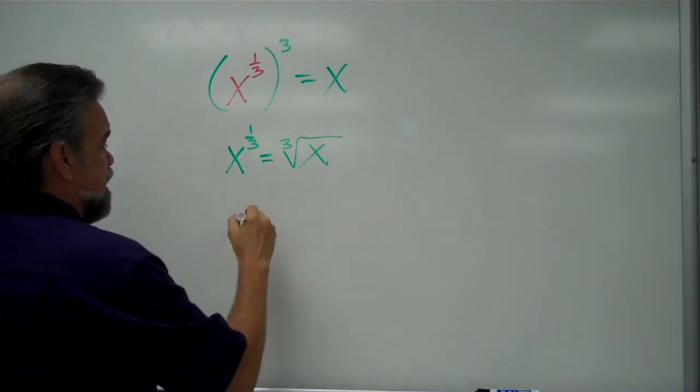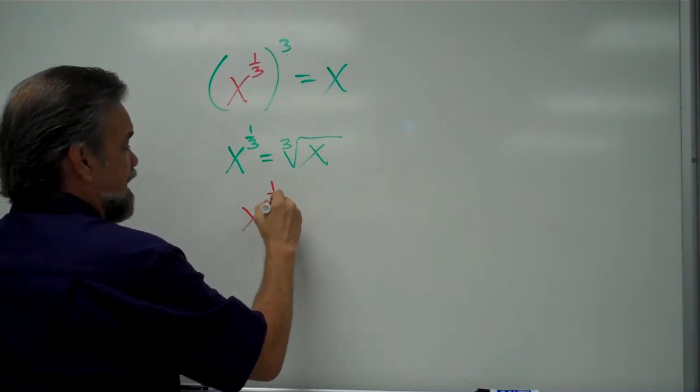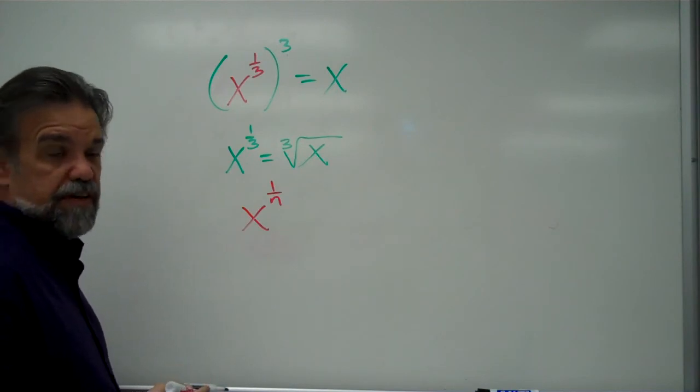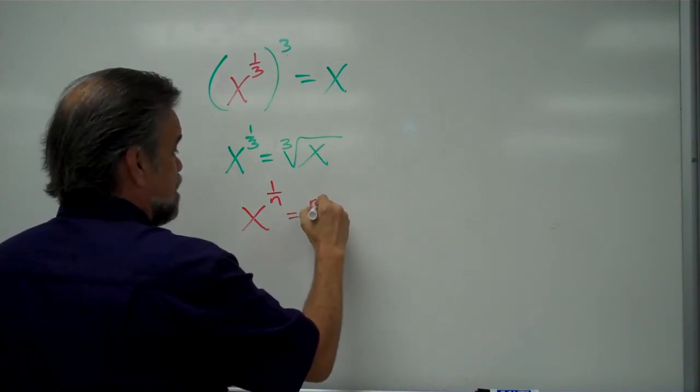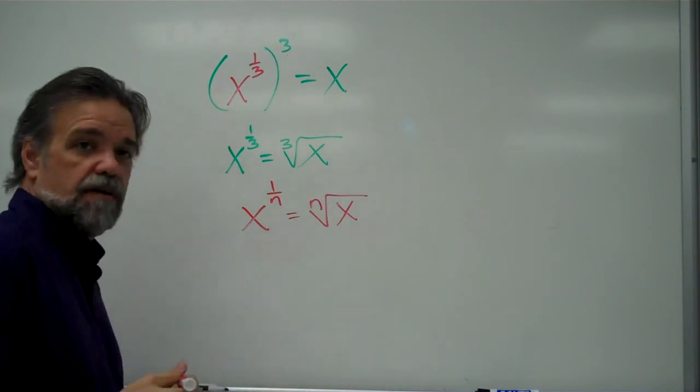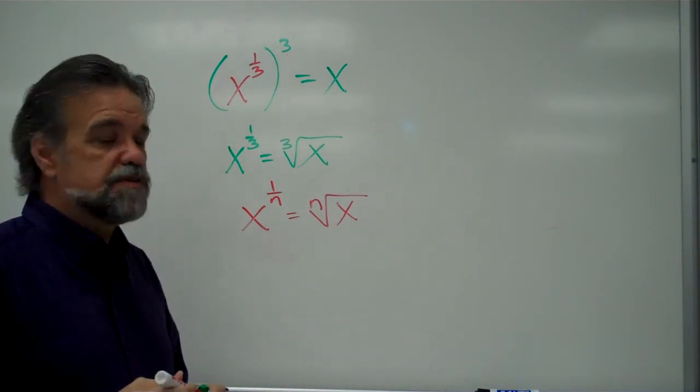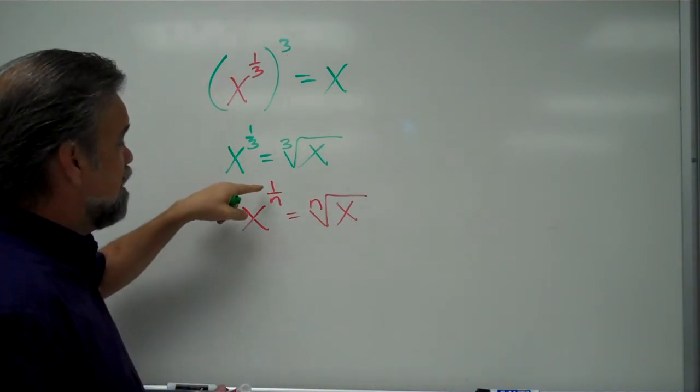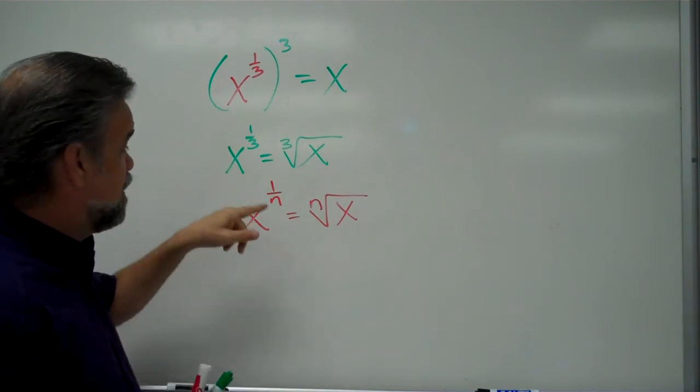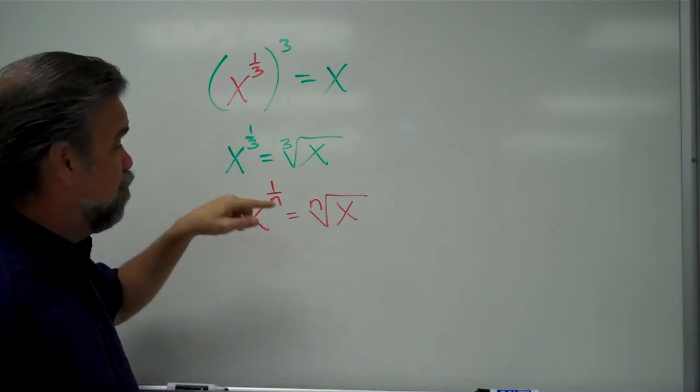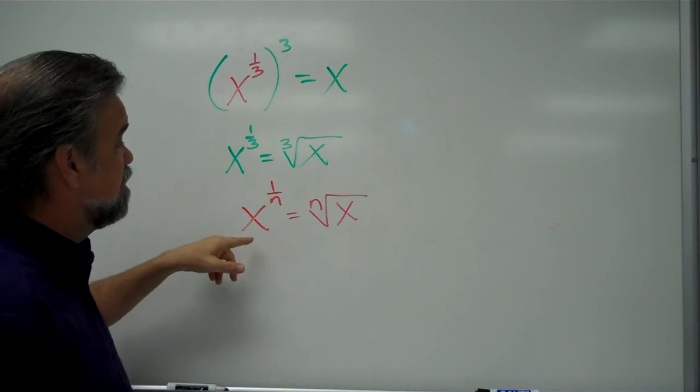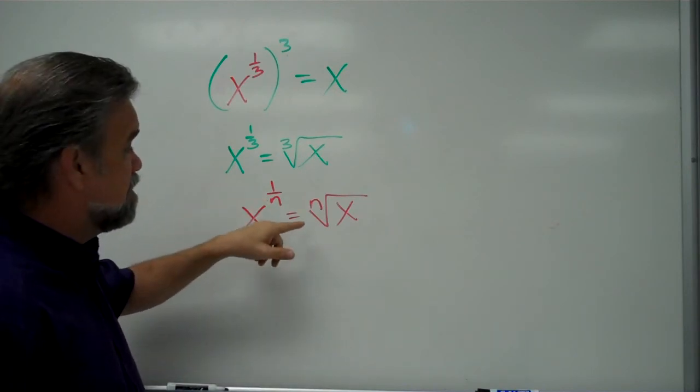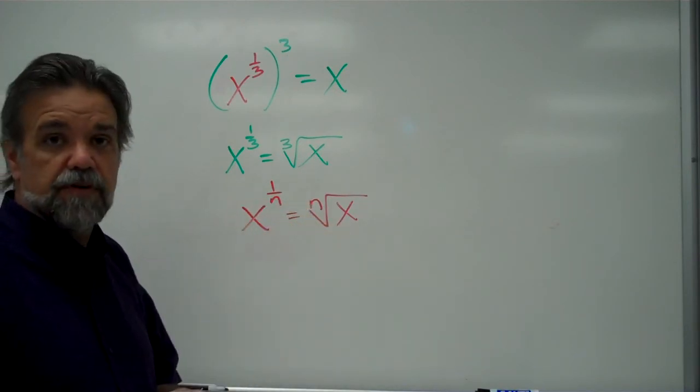And what we're going to find is that x to the 1 over anything, I'm just going to call it n, is that nth root of x. That's one of the exponent rules that I was talking about. So, if you have a rational number for an exponent, or in this case, if you have 1 over an integer for your exponent, that's the same thing as saying it's the nth root of that number.